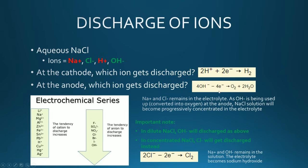So rather than oxygen being formed, you'll actually get chloride ions discharged to form chlorine molecules at the anode if it is a concentrated sodium chloride solution. That means sodium ions and hydroxide ions remain in the electrolyte, which is basically sodium hydroxide. If they don't specify, just assume it's dilute, but if they do specify a concentrated solution, then chlorine will be formed instead of oxygen.